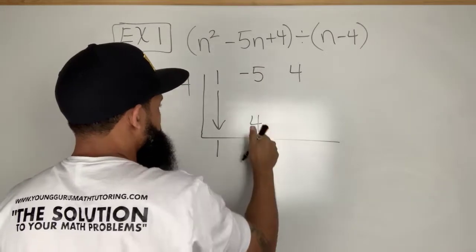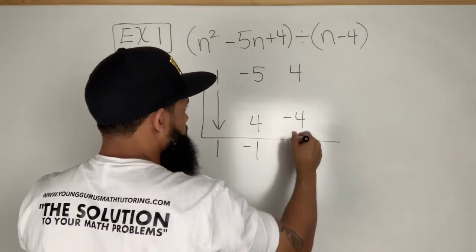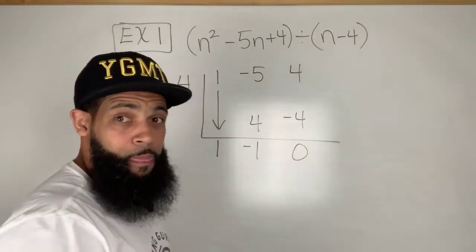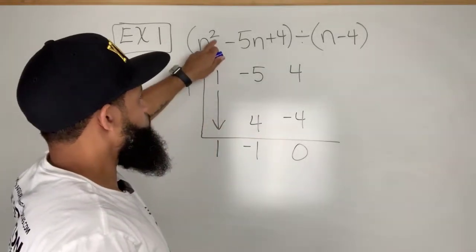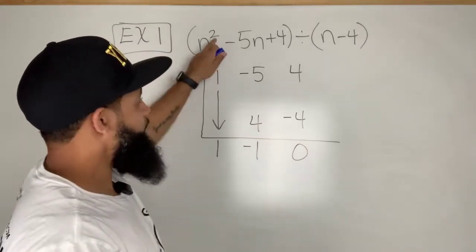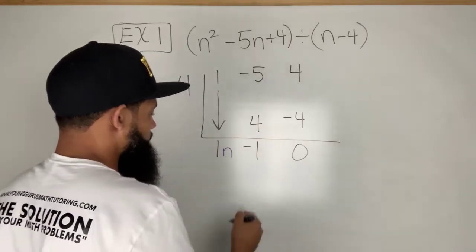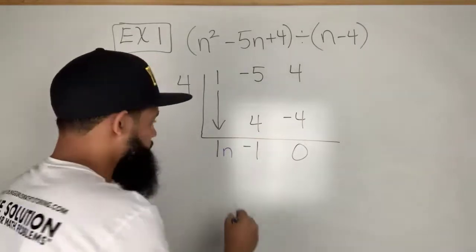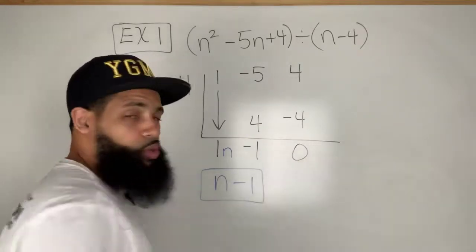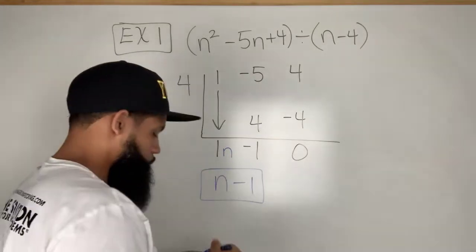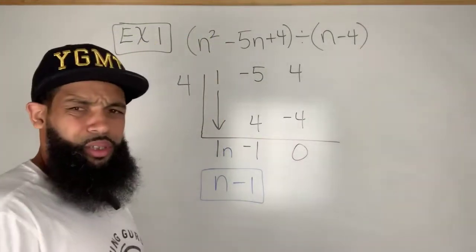I always bring down that first number right here, one. I multiply this one times the number on the outside, one times four is four, and then I add these. Negative five plus four is negative one. I multiply the four by negative one, that gives me negative four. I add these, I have zero. Now in order to write out my quotient, I'm going to start with one exponent lower than the highest one that we started with, so this is going to become n. My quotient actually is n minus one. This last number would be a remainder.